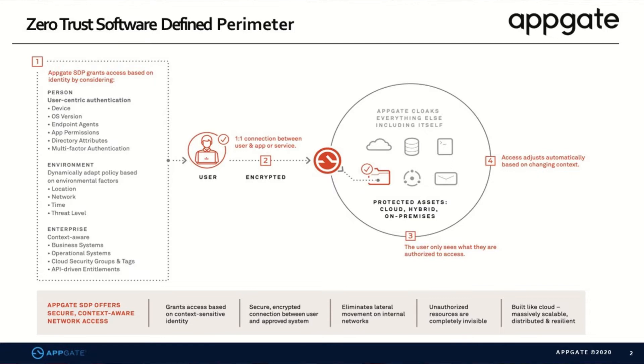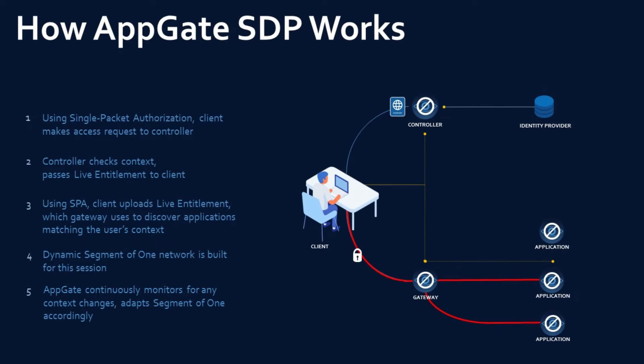In summary, SDP grants access based on context-sensitive identity. The connection between the user and the system — whether on the cloud, on-premise, or at the edge — is secure and encrypted using mutual TLS. It is built for cloud-native capabilities but is massively scalable, distributed, resilient, and enables on-premise and edge use cases as well.